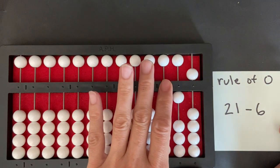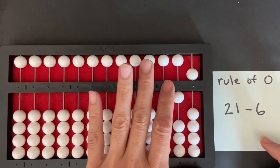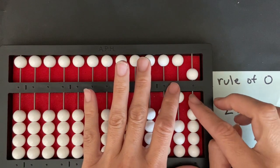And that was using the rule of zero, or a nine-ten exchange, you can also call it that, in the counting method.